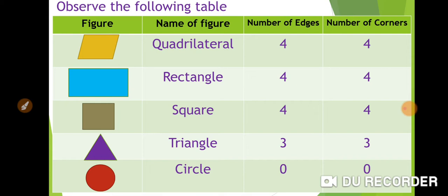Quadrilateral has four edges and four corners. Rectangle has four edges and four corners. Square also has four edges and four corners.